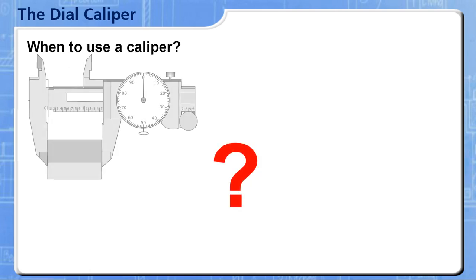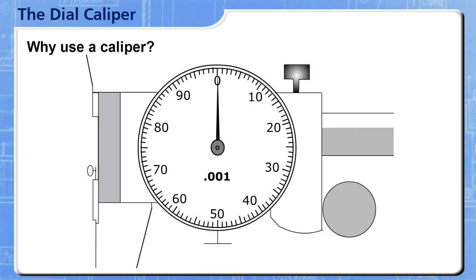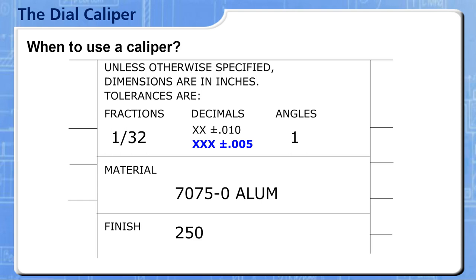When should you use a caliper, and when should you use a micrometer? People often assume that because the caliper reads to a thousandth of an inch, it's accurate for tolerances of plus or minus one thousandth of an inch. However, experience has shown that the dial caliper is not reliable for tolerances less than plus or minus five thousandths of an inch.